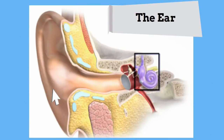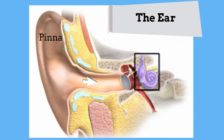The outer part of the ear is shaped like a funnel and is called the pinna. This shape enables the outer ear to gather sound. The sound waves then travel down into the ear canal. At the end of the ear canal, sound waves reach the eardrum. The eardrum separates the outer ear from the middle ear.